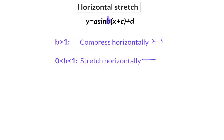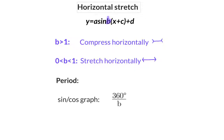Because the b value stretches the graph horizontally, it will also have an influence on the period of the graph. The b value indicates the number of complete wavelengths that will fit into the original 360 degree period. Therefore, for the sin and cos graph, the new period is 360 degrees divided by b. And for the tan graph, it will be 180 degrees divided by b.